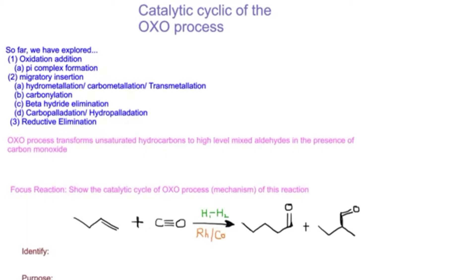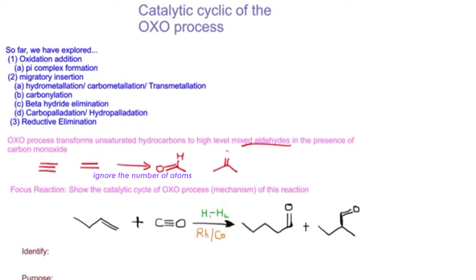The oxo process results in a type of oxidation of an unsaturated hydrocarbon. In one case we can look at alkenes or alkynes and transform them into aldehydes — either at one position or two regions — in the presence of carbon monoxide, which leads to a type of reaction called carbonylation.